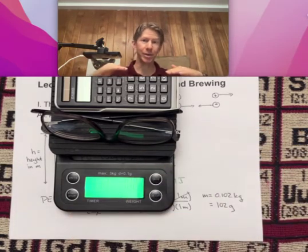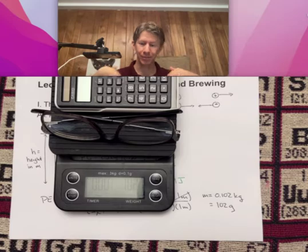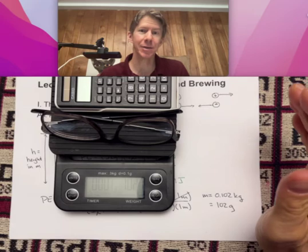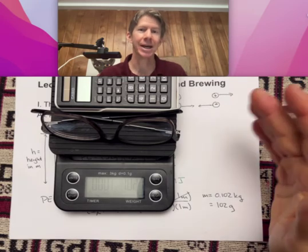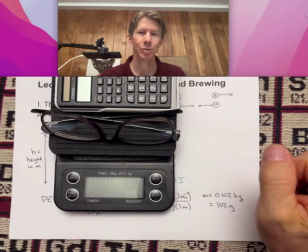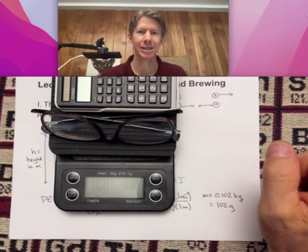So if I were to drop my calculator and my glasses from a height of one meter, or if I were to hold them there - that's what I should say - if I hold them there, then that has a potential energy of one joule. So that's a little bit about potential energy. I do want you to write down, of the two things that I said, which was your favorite set of things that has one joule of energy.